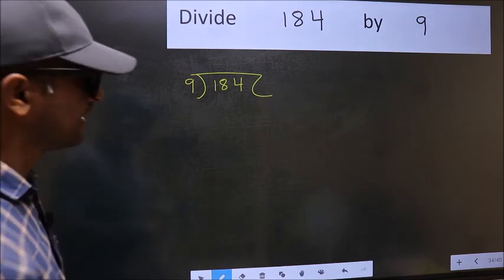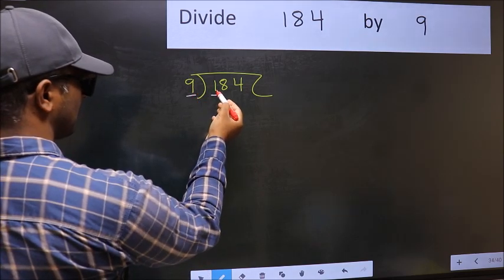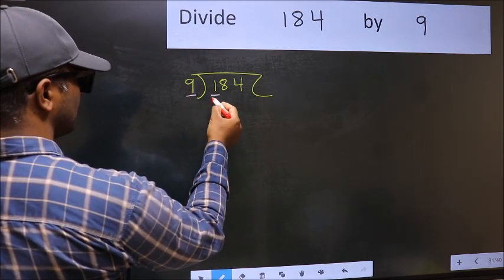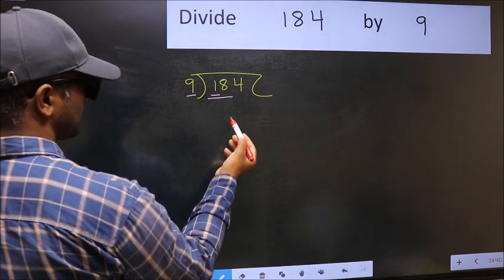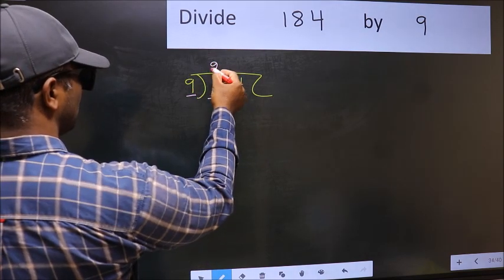Next. Here we have 1 and here 9. 1 is smaller than 9. So we should take two numbers, 18. When do we get 18 in 9 table? 9×2 is 18.